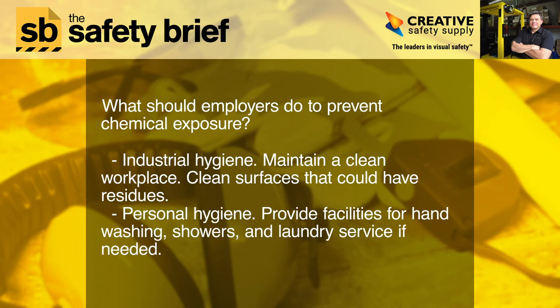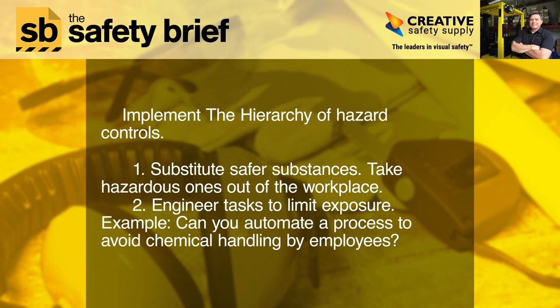What should employers do to prevent chemical exposure? Maintain industrial hygiene and a clean workplace — clean surfaces that could have residues. Provide facilities for handwashing, showers, and laundry service if needed. Implement the hierarchy of hazard controls: one, substitute safer substances and take hazardous ones out of the workplace; two, engineer jobs to limit exposure — for example, automate a process to avoid chemical handling by employees.